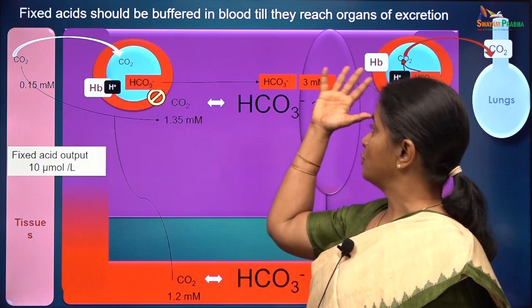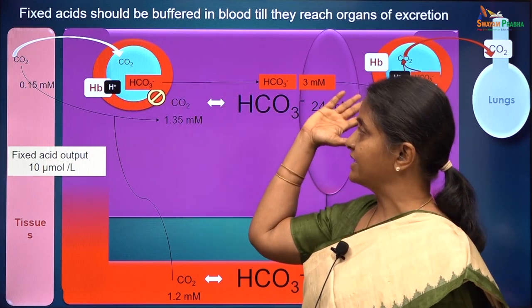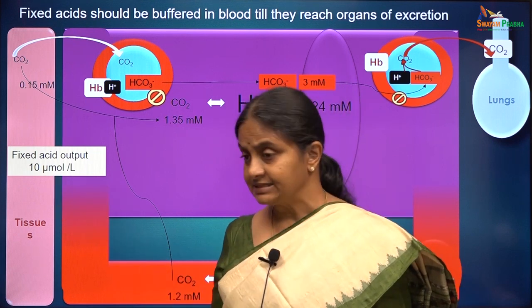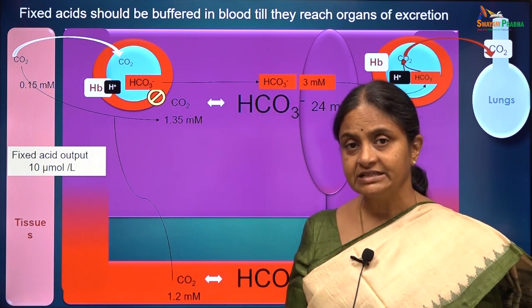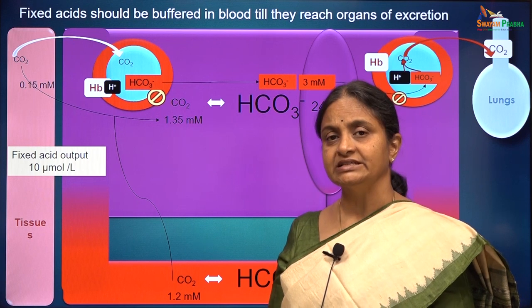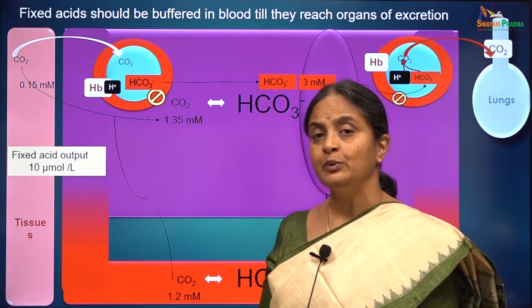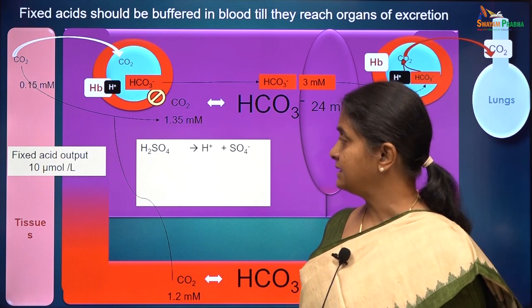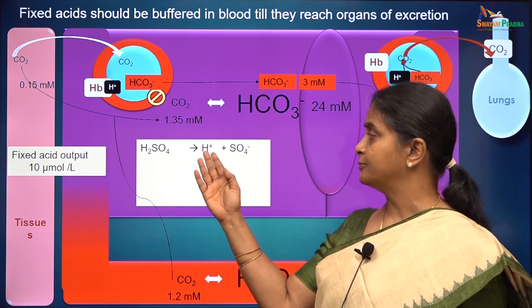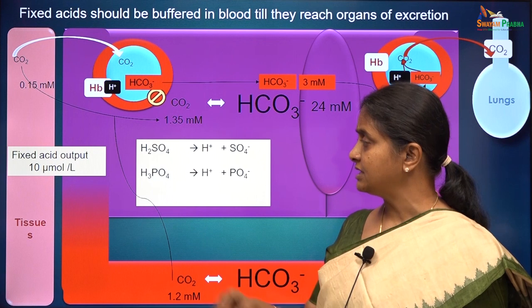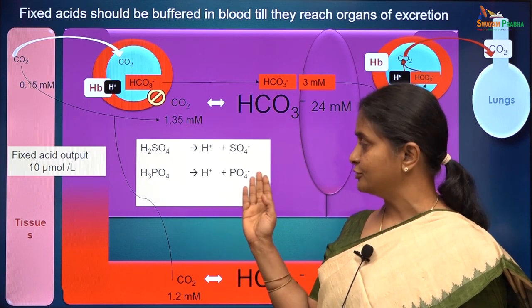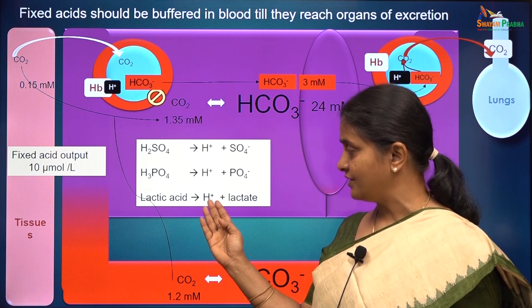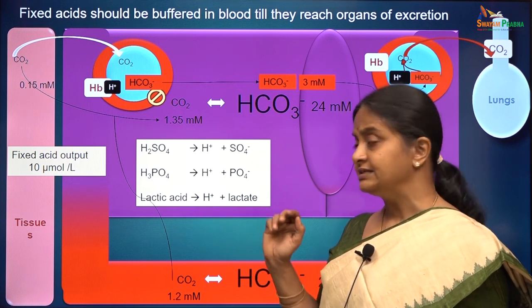That is what we have been discussing in the last two lectures — carbon dioxide handling in the blood. What are the fixed acids? Sulphuric acid, phosphoric acid, lactic acid. We will take these three and see how they ionize. Sulphuric acid will give protons and sulphate anions. Phosphoric acid would give protons and phosphate anions. Lactic acid would give hydrogen ions and lactate.